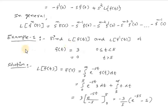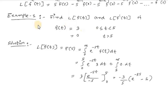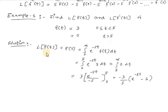Now we will see some examples. Example 1: Find Laplace of f(t) and Laplace of f'(t), where f(t) equals 3 when t is between 0 and 5, and 0 when t is greater than 5. First we will find Laplace of f(t) using the fundamental definition: F(s) equals integration from 0 to infinity of e^(-st)·f(t) dt.